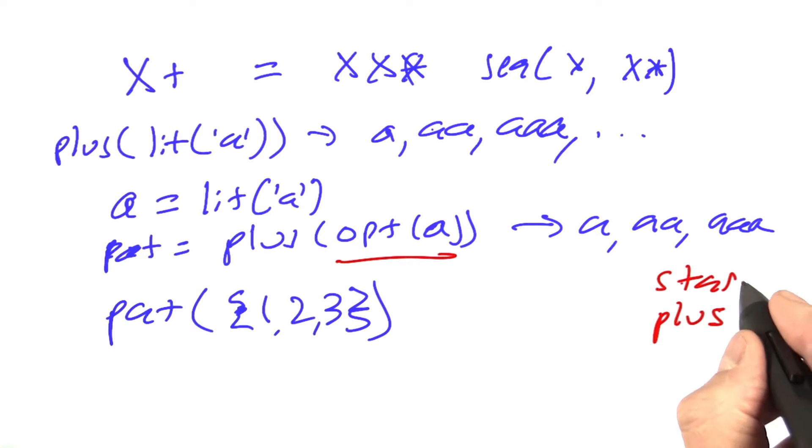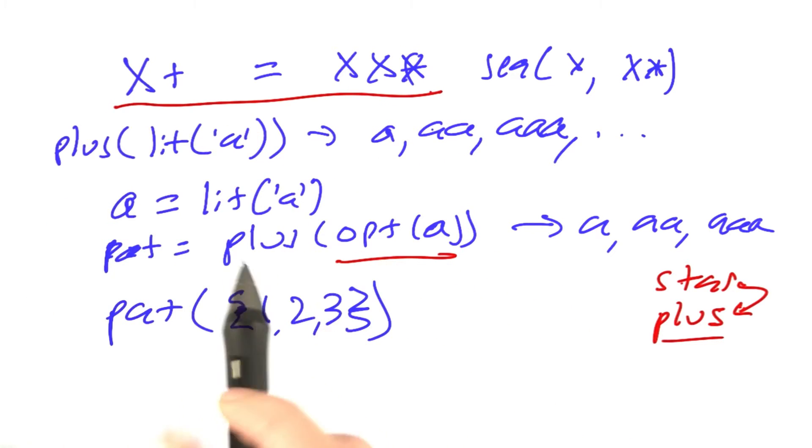But now star I defined in terms of plus, so all that's left is to fix plus to not have an infinite recursion. Here's how I define plus. I said that x plus is defined as x followed by an x star, and the x star is in turn defined in terms of x plus.